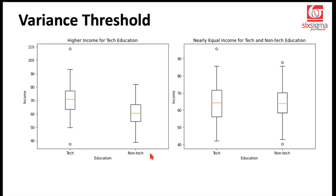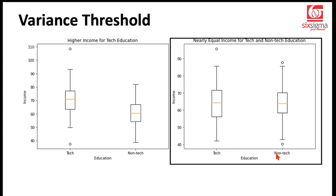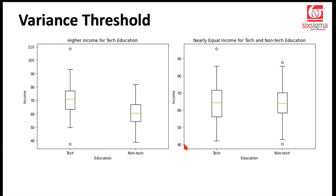But looking at the plot on the right, for another organization, is there a difference between technical and non-technical profiles? The answer is no, because their medians are nearly overlapping — you don't see a significant influence of educational background on income for this organization. Educational background has an important role to play only in the case on the left, where you see a difference in the outcome depending on the choice of educational background. On the right, irrespective of educational background, the outcome doesn't change.